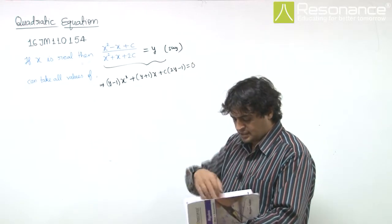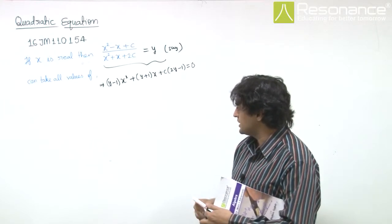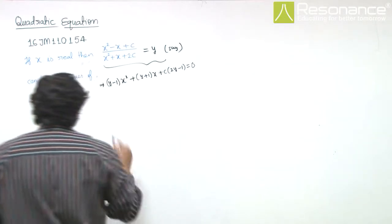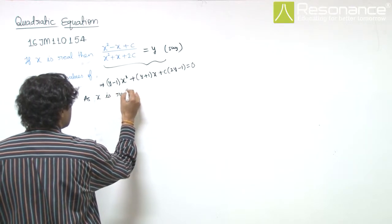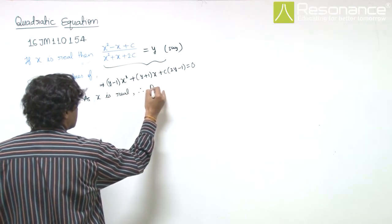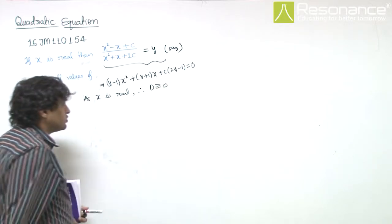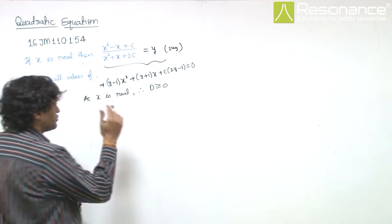Now, we are given that x is real, so discriminant must be greater than or equal to 0. So, as x is real, the discriminant will be greater than or equal to 0.